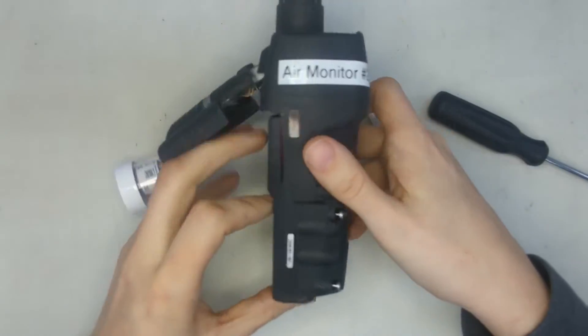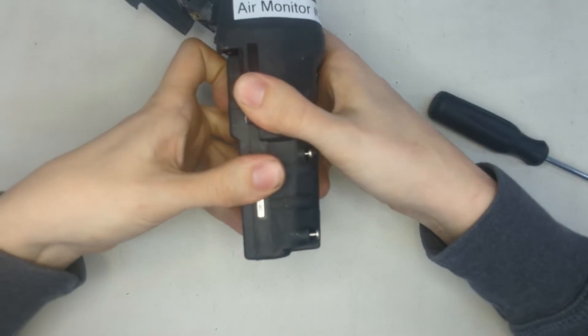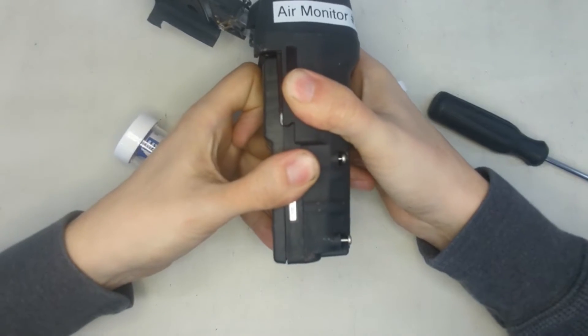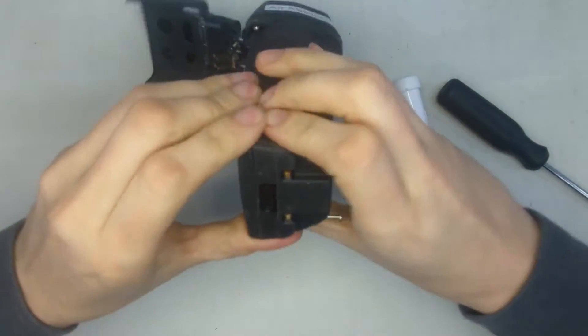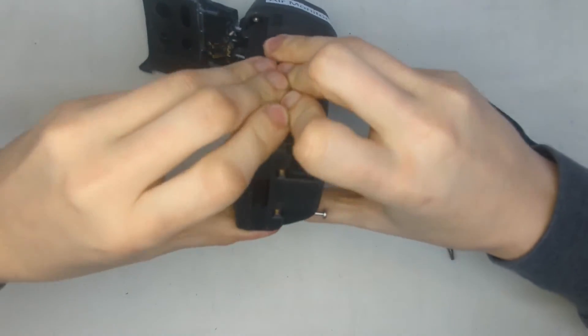I'm going to unscrew the four screws in back here. Okay, now we've got the screws out. I'm just going to pull the unit here straight out. Now the first time you do it, it might be a little difficult. You might have to pry it just a little bit.